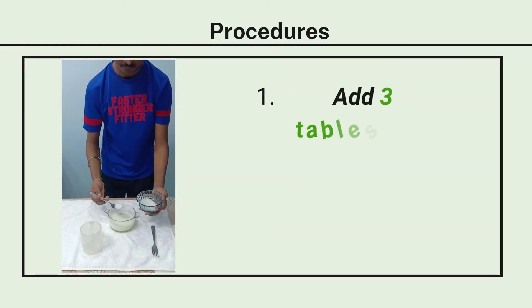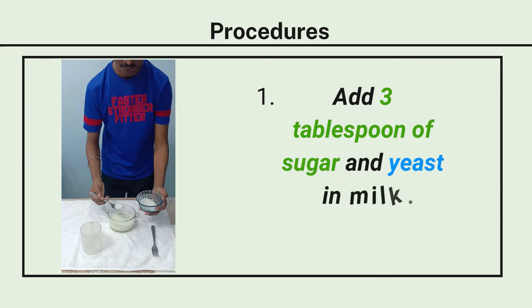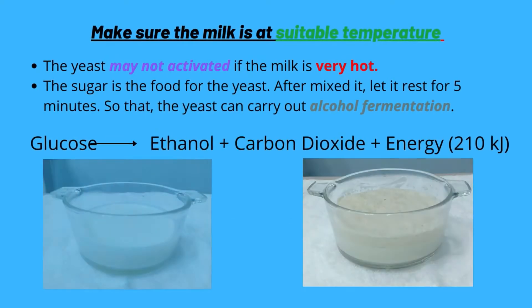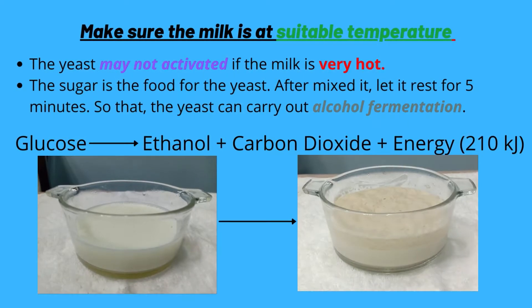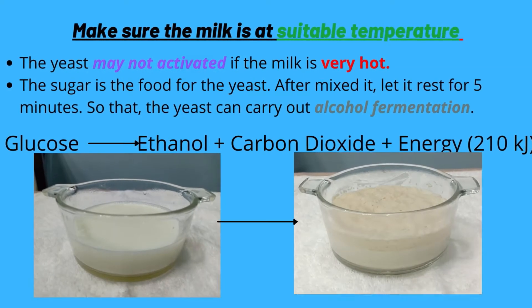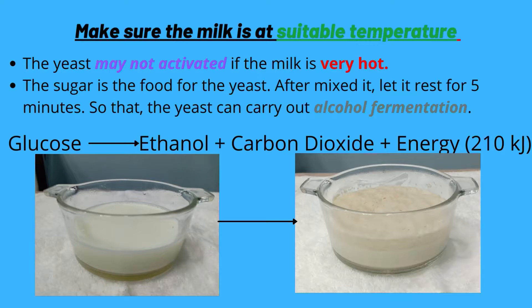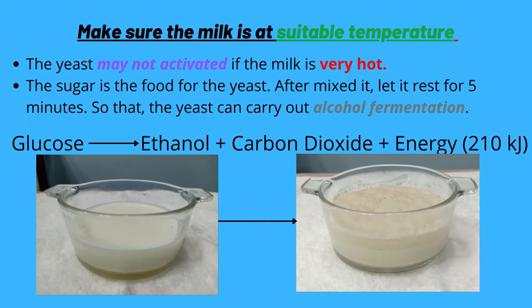The first step: we will be adding 3 tablespoons of sugar and yeast into the milk. We have to make sure the milk is at a suitable temperature because the yeast may not be activated if the milk is very hot. The sugar that we added is the food for the yeast. After mixing, let it rest for 5 minutes so that the yeast can carry out alcoholic fermentation. As you can see, the milk has risen up after 5 minutes because of the activation of the yeast.